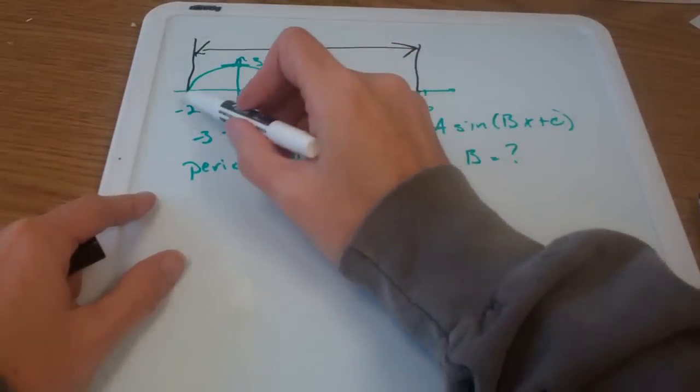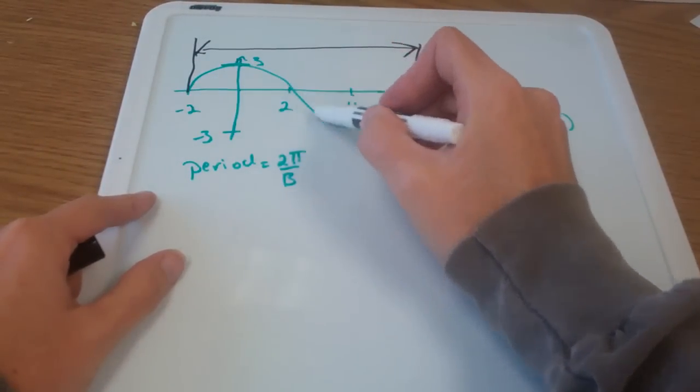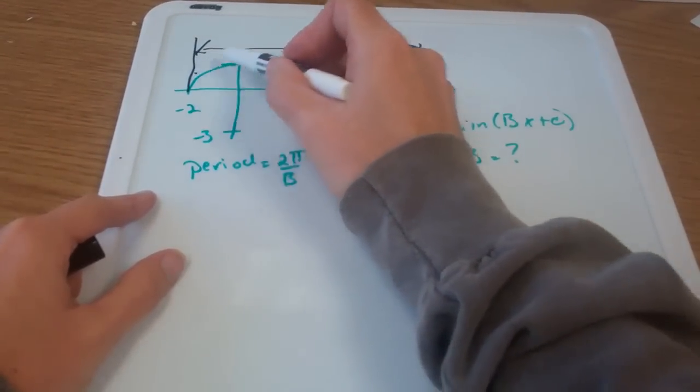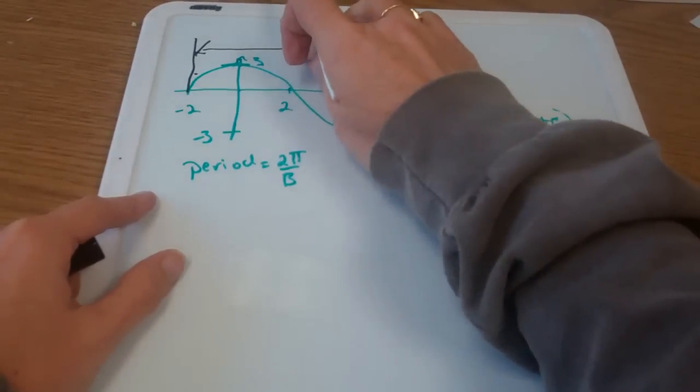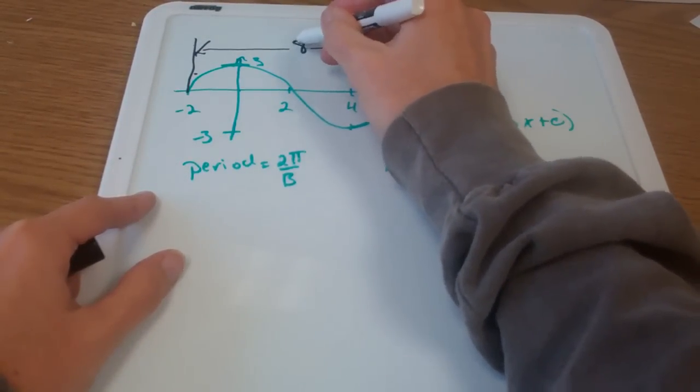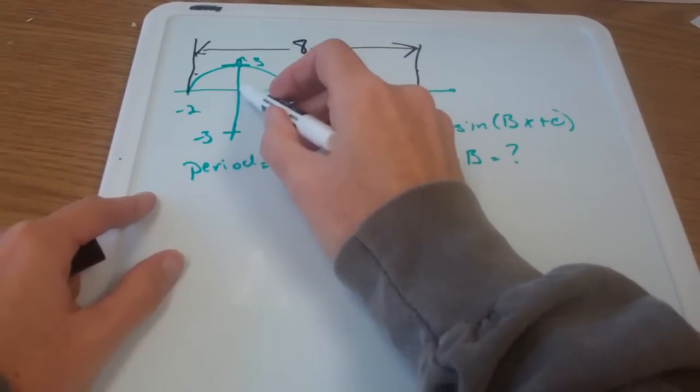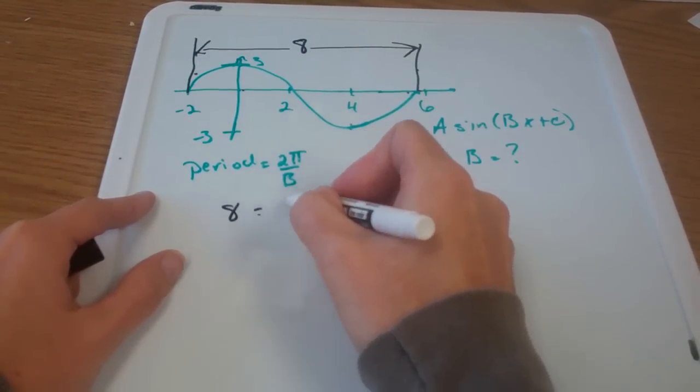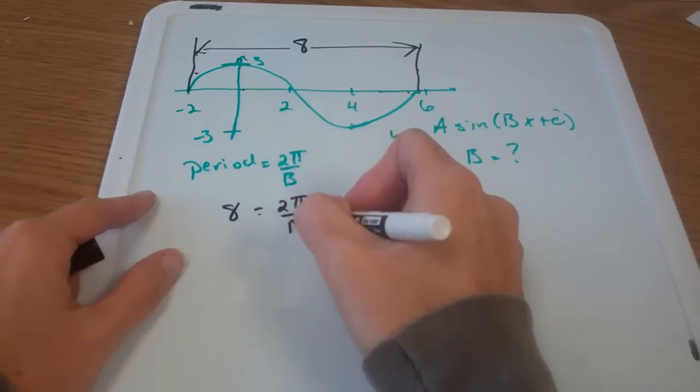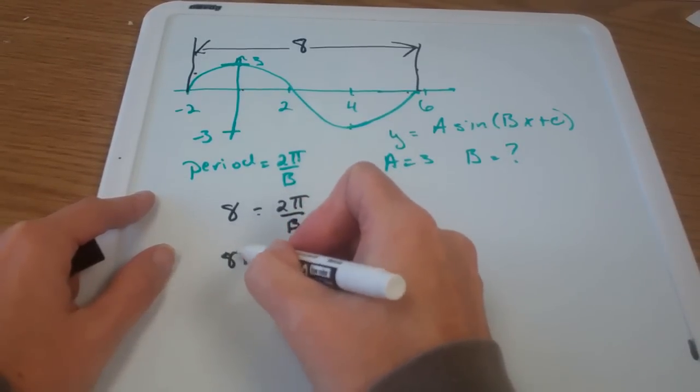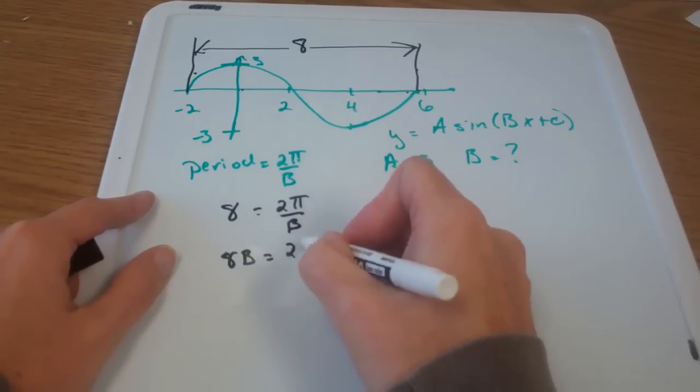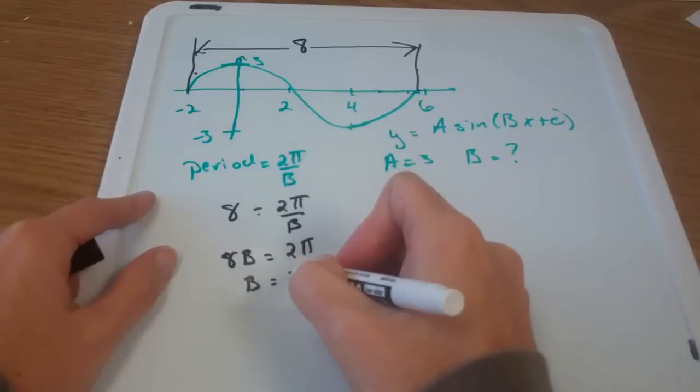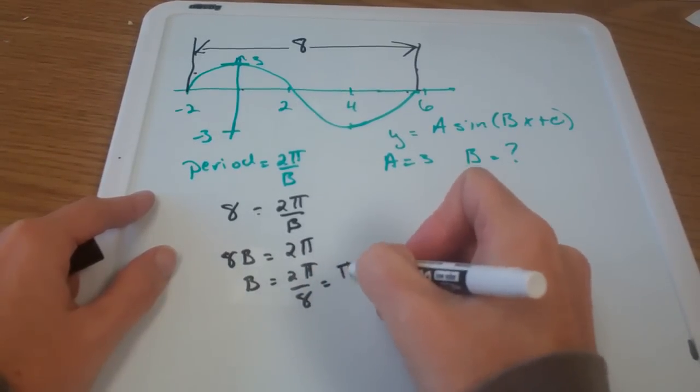So in my picture here I can see one cycle of sine, one hump up, one hump down, takes from here to there. So that's a distance of eight. Negative two up to zero and then another six beyond is eight. So I'm going to solve this now. Eight equals 2π over b. Eight b equals 2π. So b equals 2π over eight or π over four.